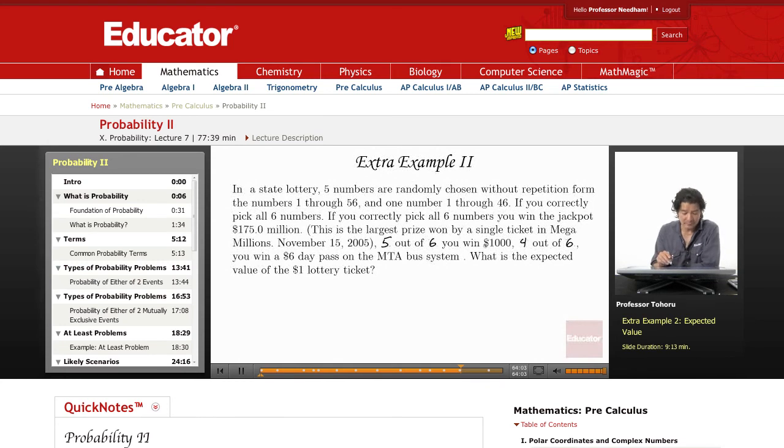This is the Mega Millions prize, which in November 2005 was $175 million. I think it was split up between seven people, but it's the largest single ticket that has won.